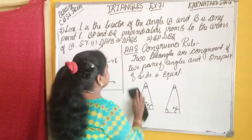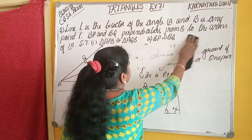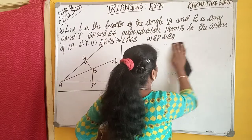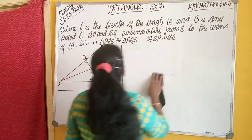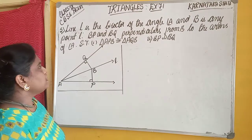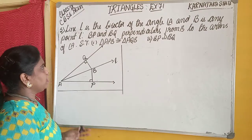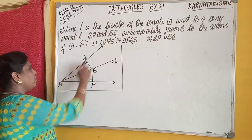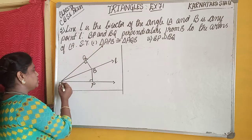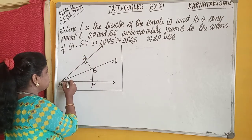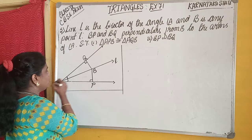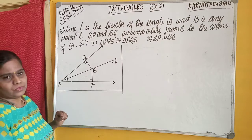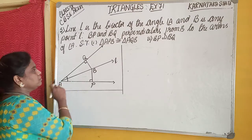Now let us solve this fifth problem. Line L is the bisector of angle A. Line L is the bisector of angle A — it divides angle A equally into two parts. Therefore, angle QAB is equal to angle BAP. These two angles are equal.